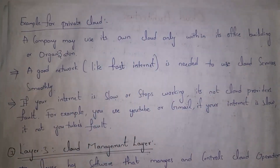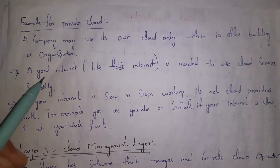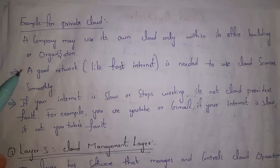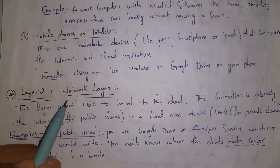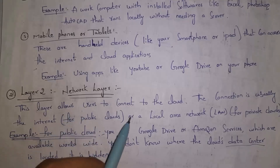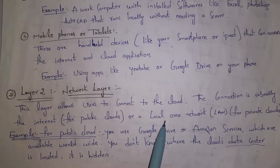Some companies use their own cloud only within their office building or organization. If you want to use any cloud service, you need a good, fast internet connection. If your internet is slow, that is not the cloud provider's fault — for example, if a YouTube video keeps buffering, it is because your internet is slow, not YouTube's fault. By using the network layer, users connect to cloud via the internet for public clouds and via LAN for private clouds.